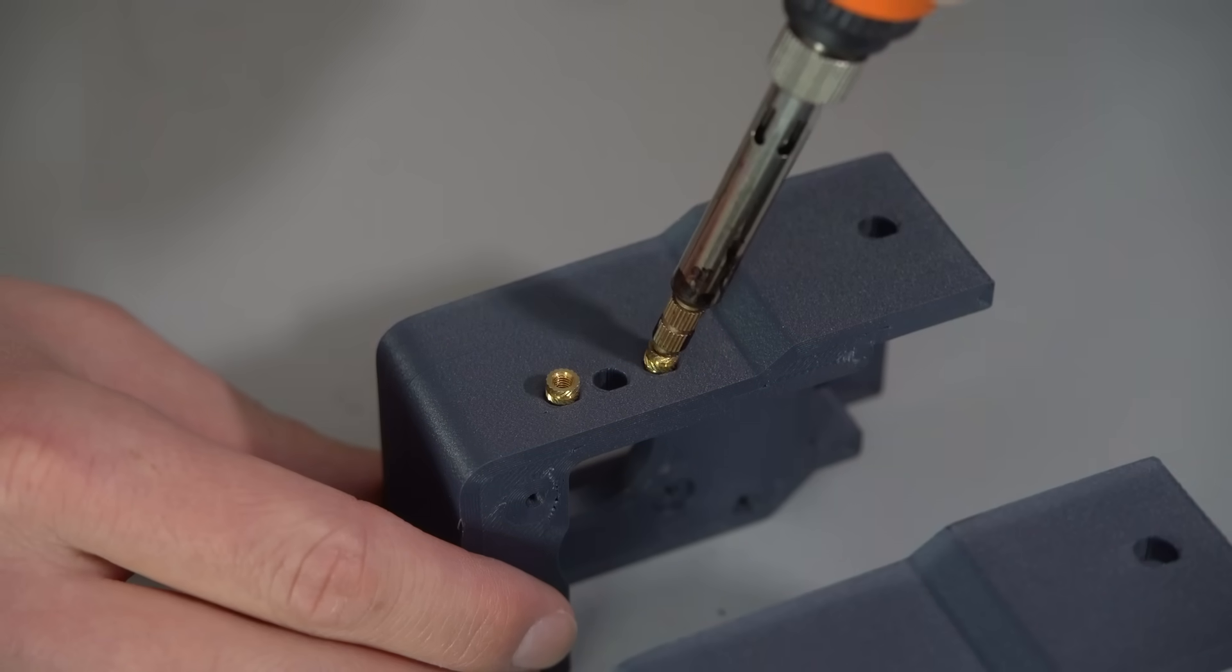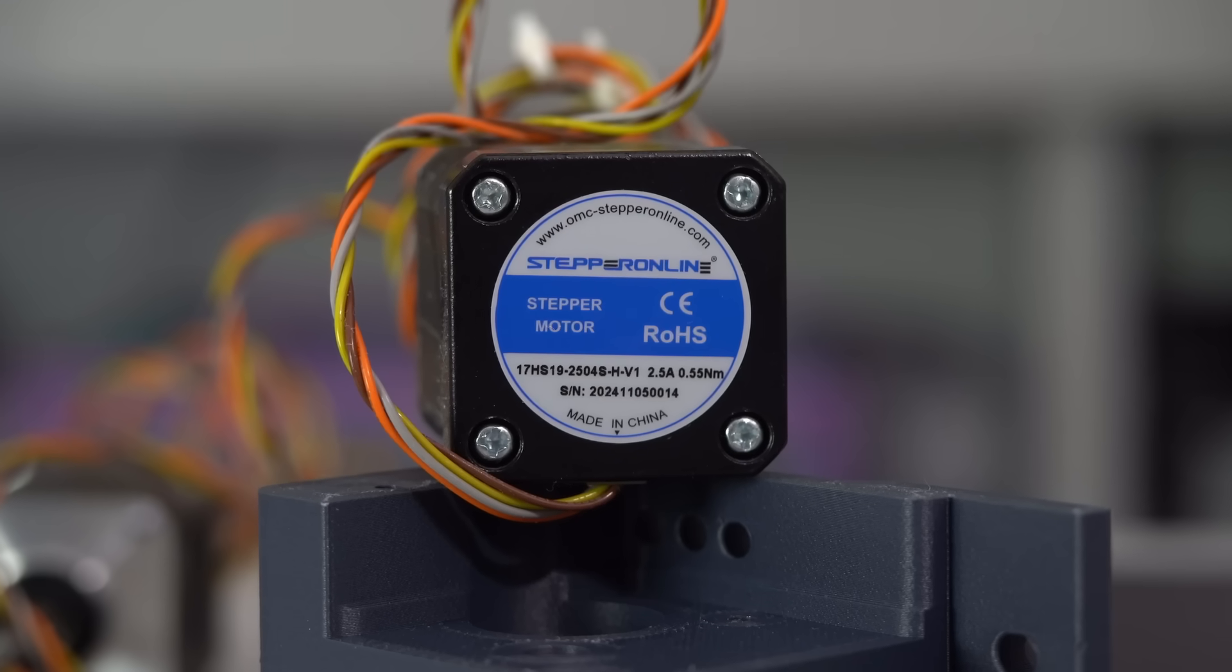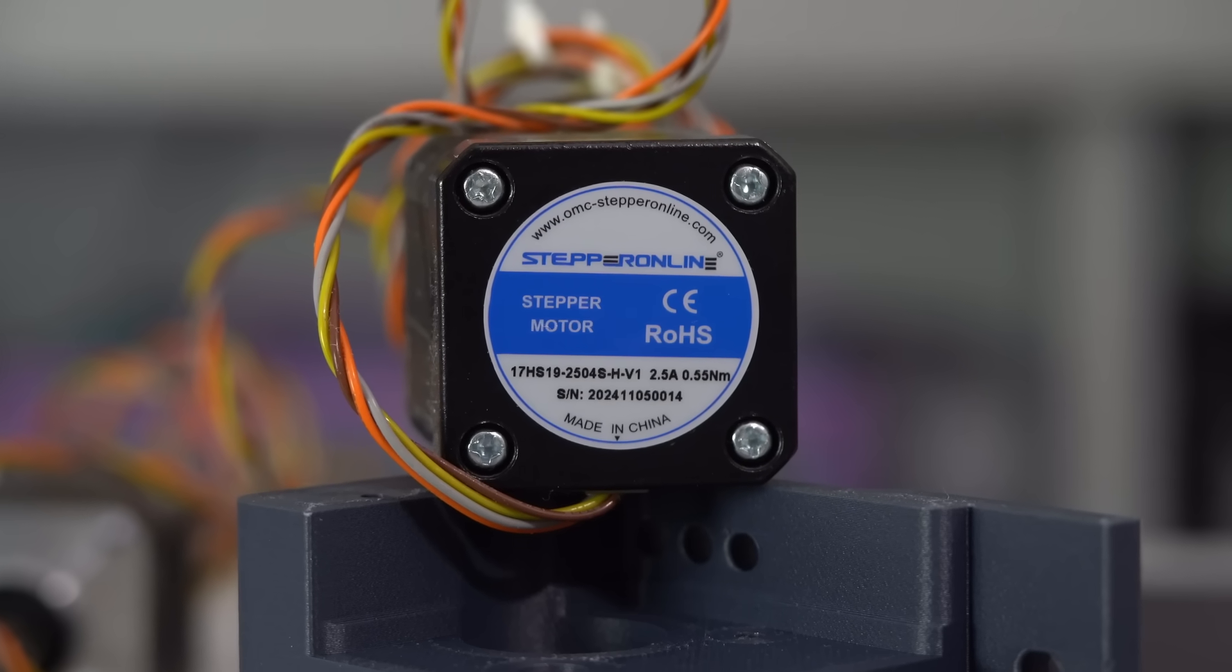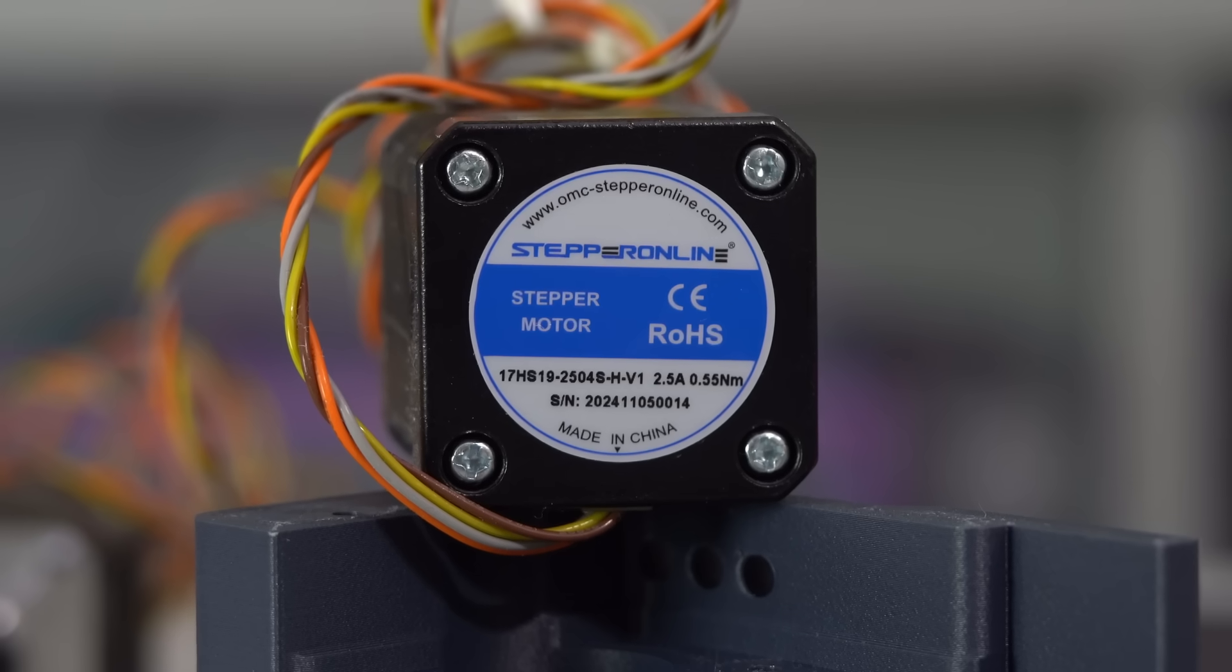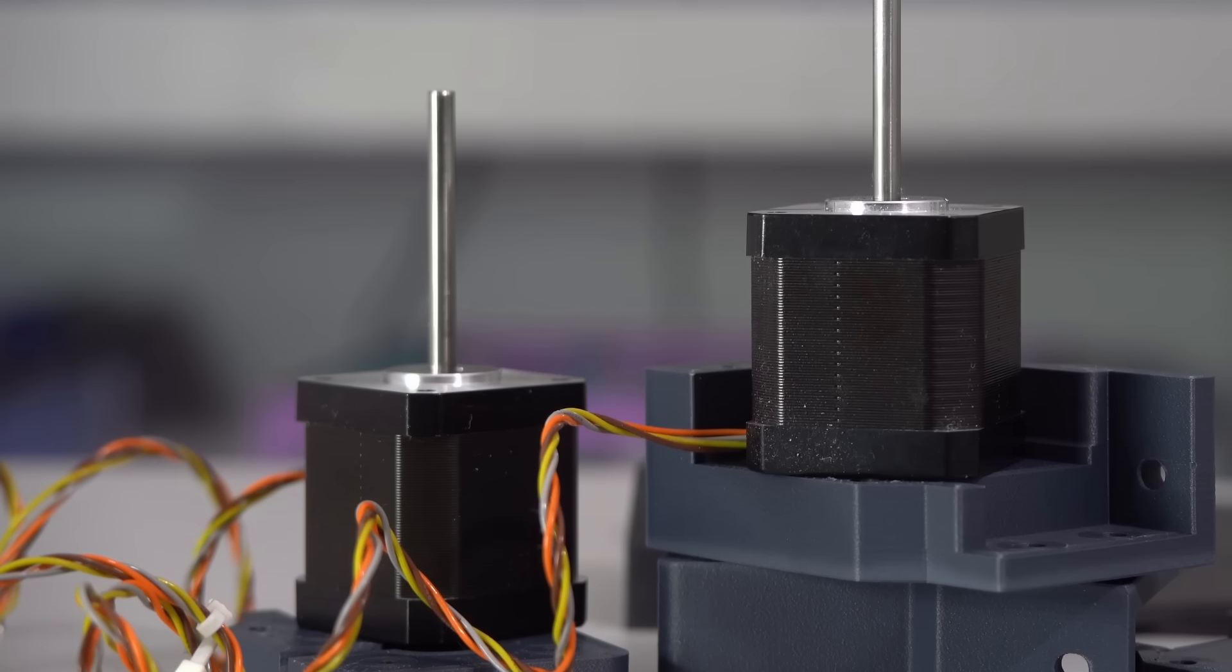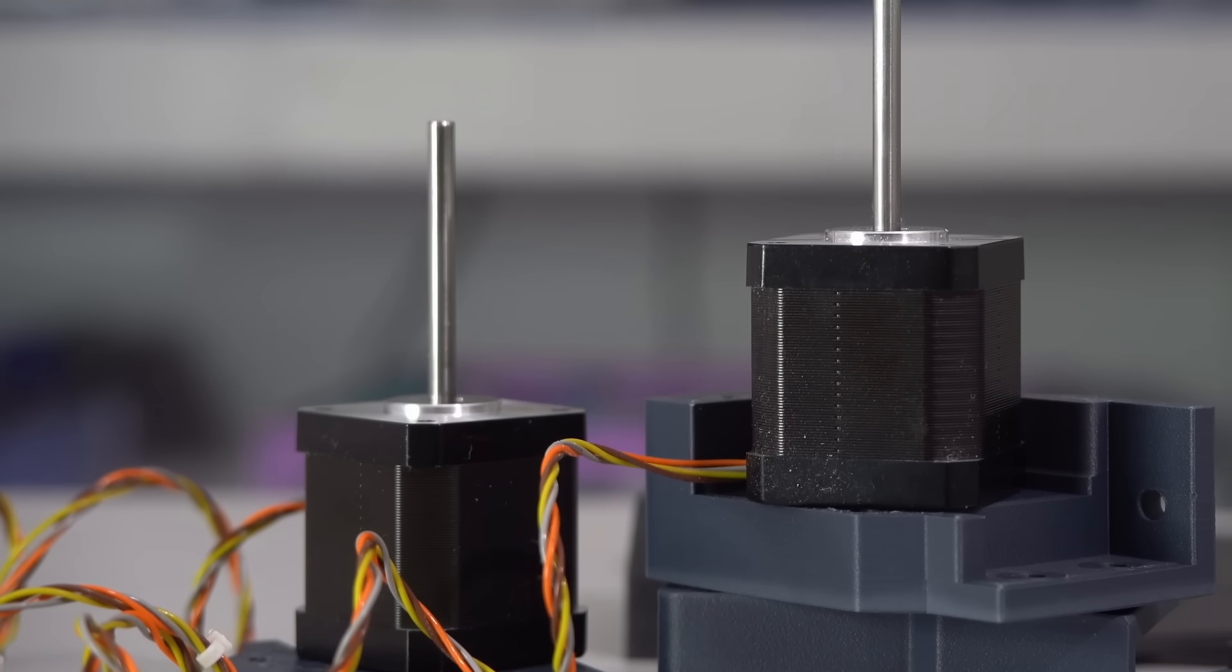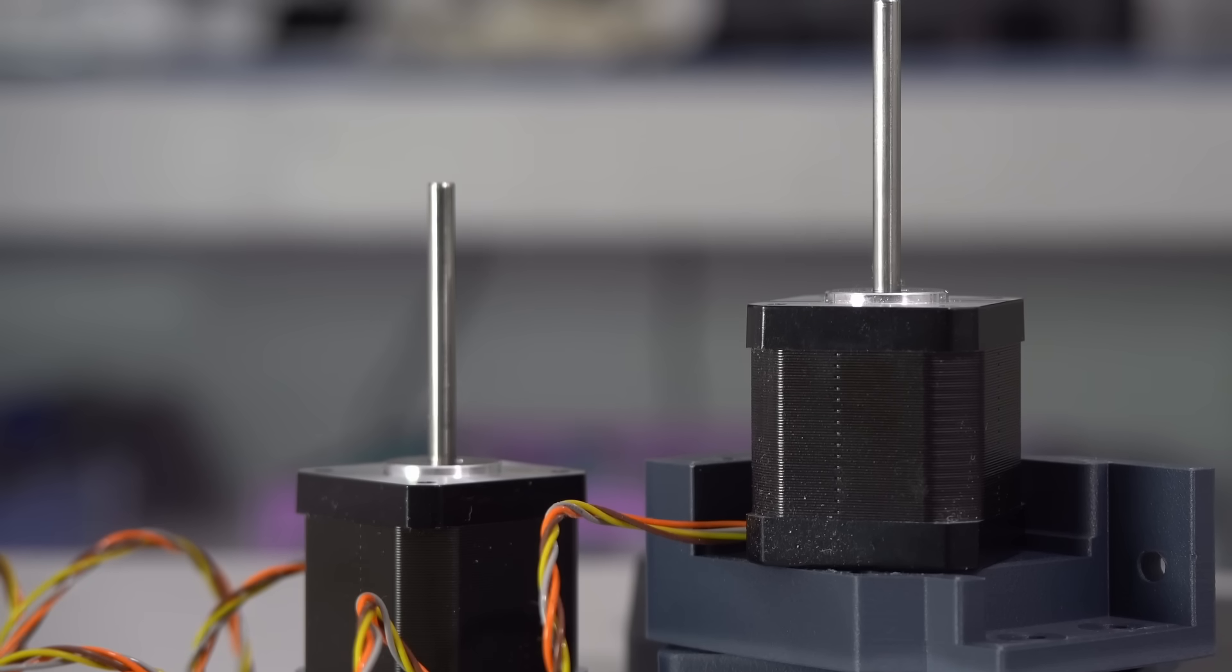I printed out the motor mounts on my Q1 Pro and got to assembling them. For motors, I'm trying out the OMC 17HS192504SHV1 motors, or just OMC2504s for short. These are relatively affordable, super high-performance NEMA 17s that will get even faster once we add 48 volts into the equation. But we'll talk about that later.